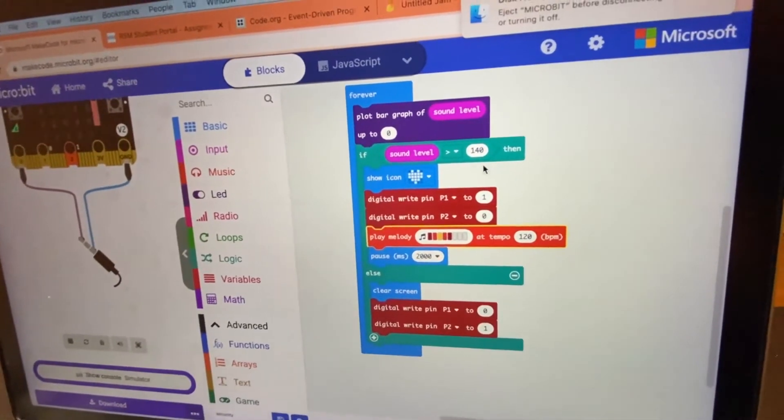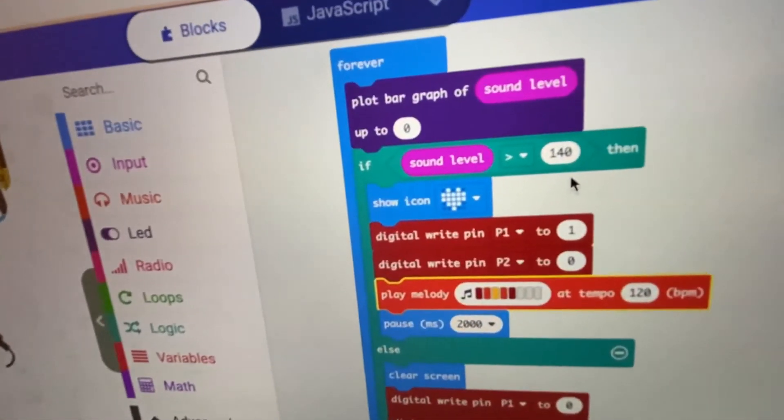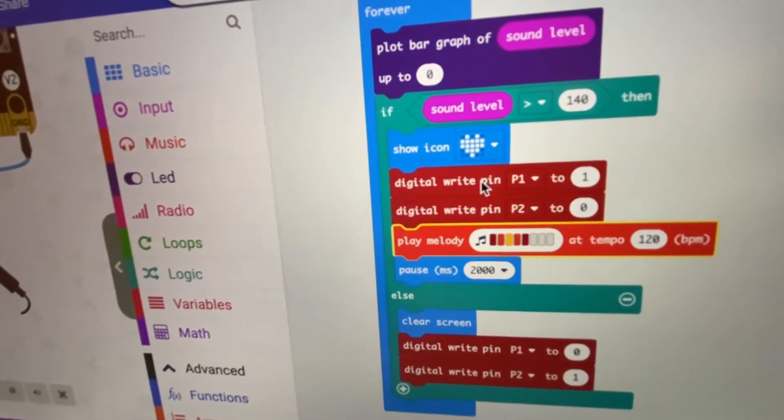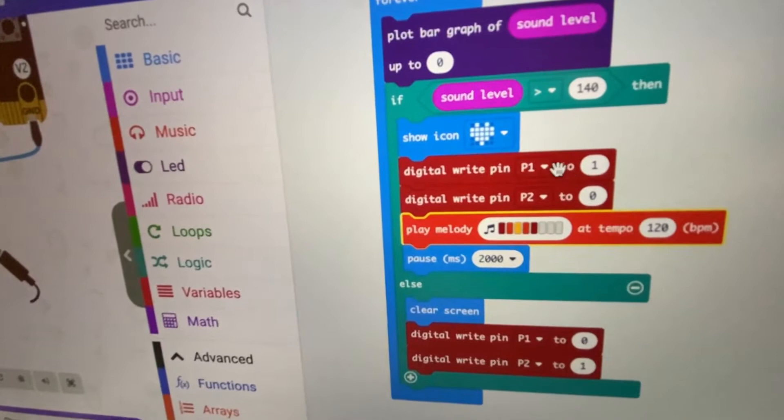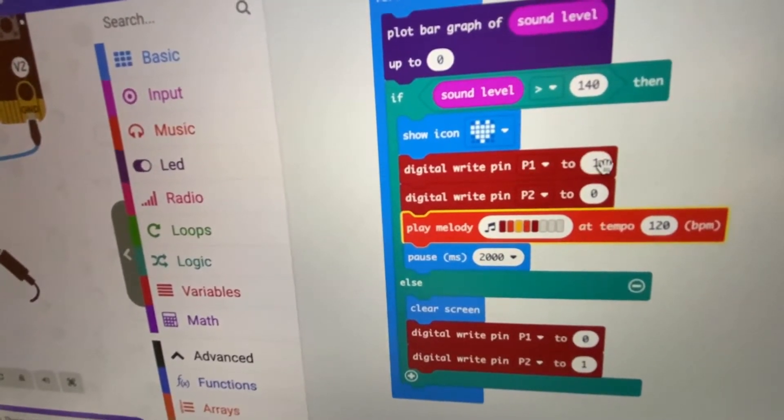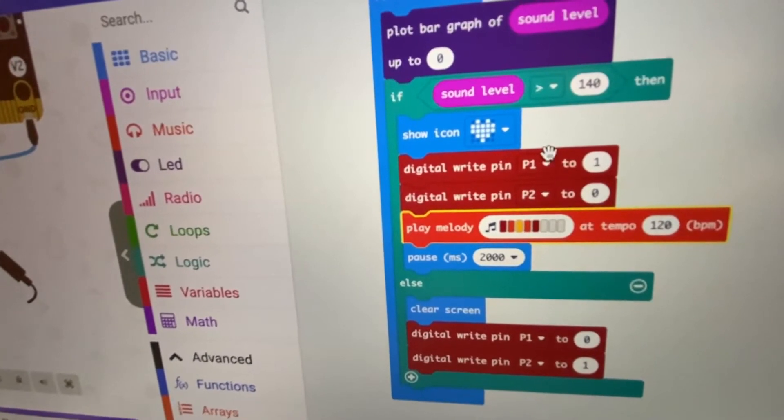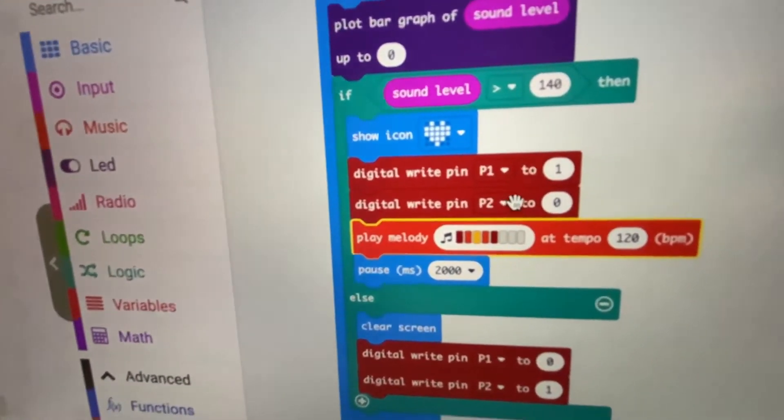If the sound level is a specific amount, then it will be showing a heart icon. Pin 1 is basically my red LED, so it will turn that on and turn the green LED off.